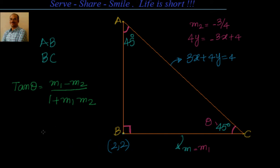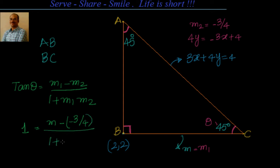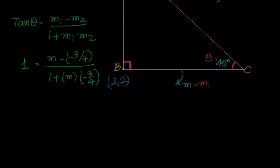tan theta is 1. We are interested in the acute angle, so we will consider only the positive value. m1 minus m2 divided by 1 plus m1 times m2. So m2 is minus 3 by 4. I will have m minus of minus 3 by 4 divided by 1 plus m times minus 3 by 4. Let's go to the next step.